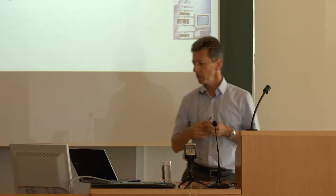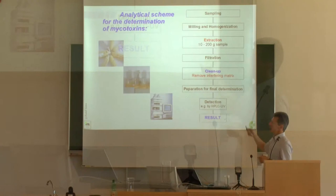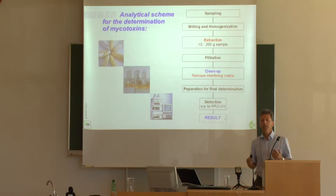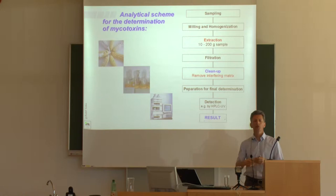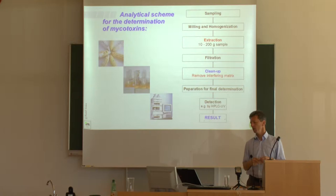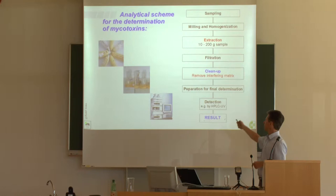The determination of mycotoxins involves individual steps to be discussed step by step. It all starts with proper sampling — how to take a representative sample — followed by milling, homogenization, and extracting the sample, usually with a mixture of water and organic solvent. The water is there to make the commodity more accessible by swelling it for the subsequent or simultaneous extraction using an organic solvent.